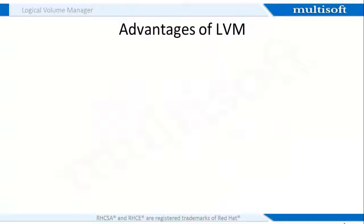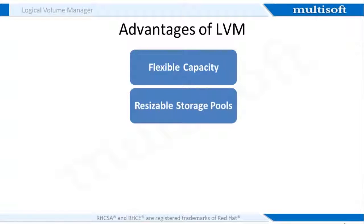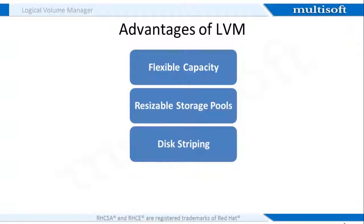Let me discuss the advantages of LVM. It provides flexible capacity — while using logical volumes, file systems can extend across multiple disks because aggregation of disks and partitions can happen into a single logical volume. It also possesses resizable storage pools, which allow you to extend or reduce logical volumes in size with simple software commands without reformatting and repartitioning the underlying disk devices. Additionally, it allows disk striping, in which a logical volume can be created that stripes data across two or more disks, which can increase throughput dramatically.